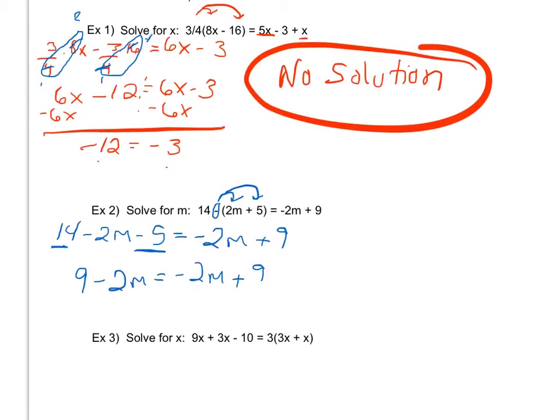From here I'm going to go ahead and say I do not want an m on both sides, so I'm going to add 2m here, which means I also have to add 2m here. So my 9 drops down, -2m + 2m is gone. -2m + 2m is gone here as well. My 9 drops down.